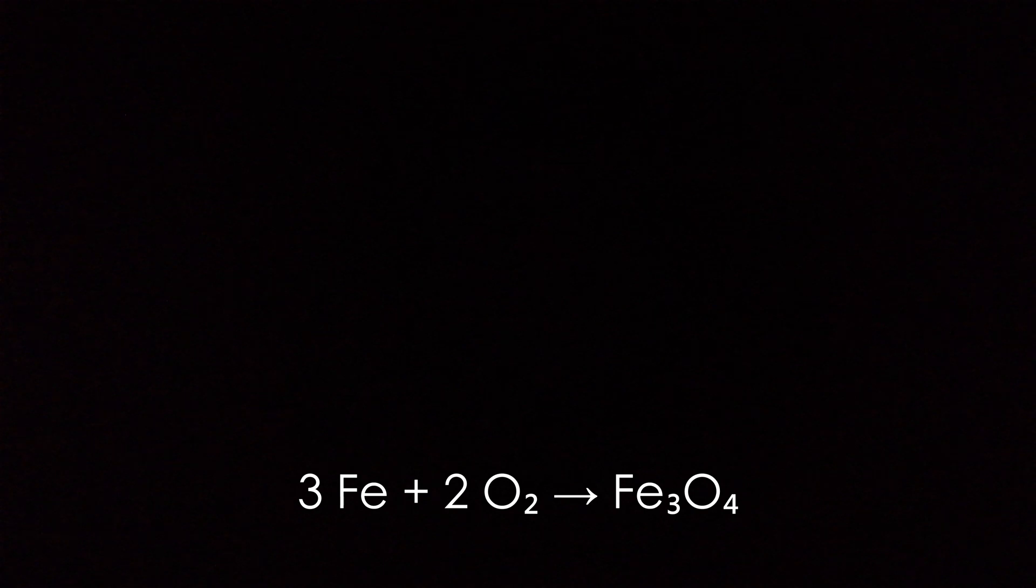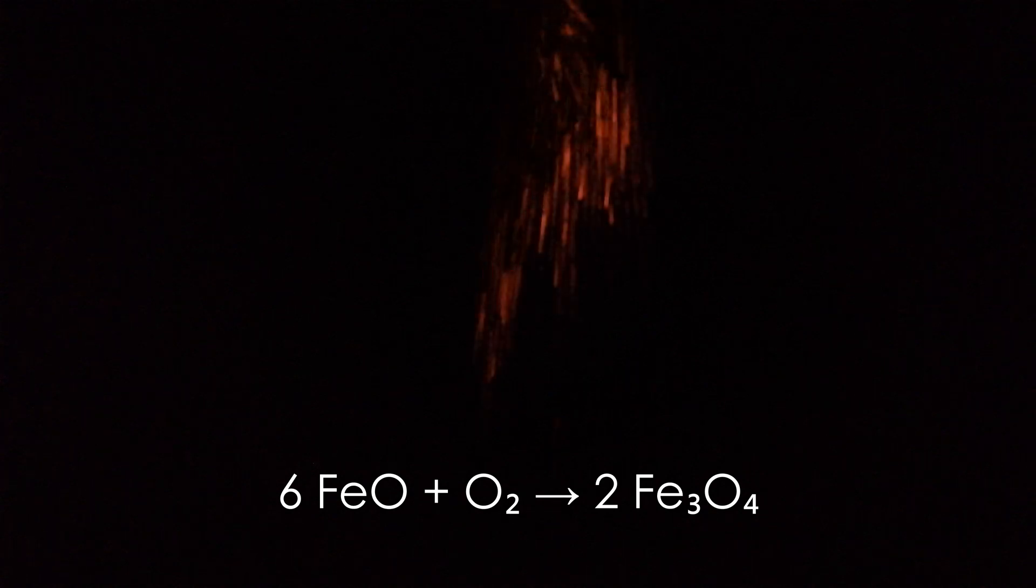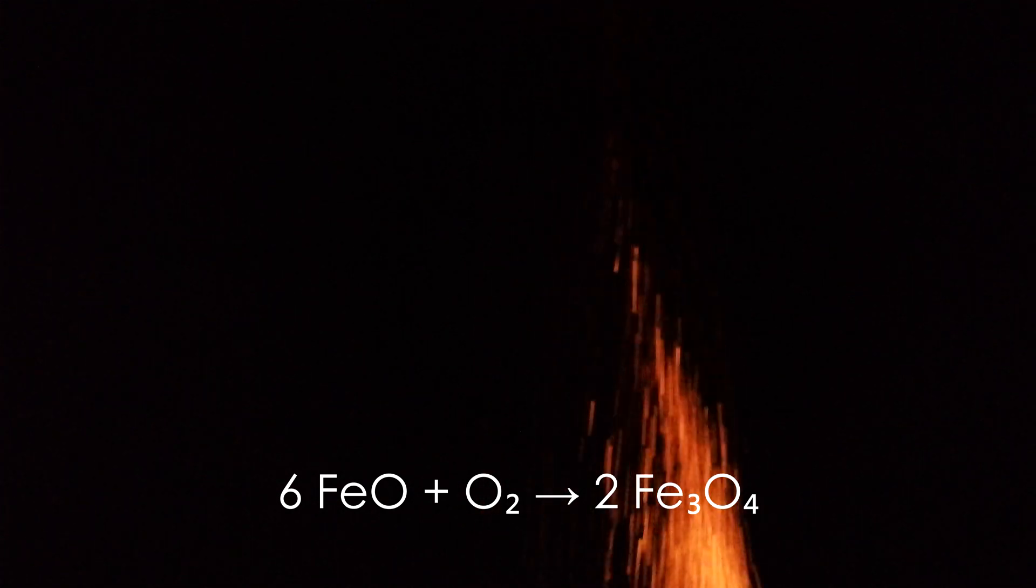If we dump out our pyrophoric iron from a small height, it will form a nice shower of sparks. Upon contact with air, particles of pyrophoric iron immediately combust, forming magnetite. If there is any ferrous oxide present, it is also oxidized to magnetite.